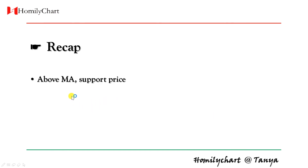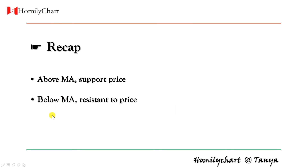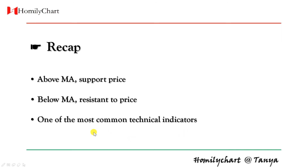Today we learned moving average. If price is above the MA moving average line, that means the moving average line supports the price. If the candle is below MA, that means the moving average line acts as resistance to price. MA is one of the most common technical indicators — very helpful and very simple.